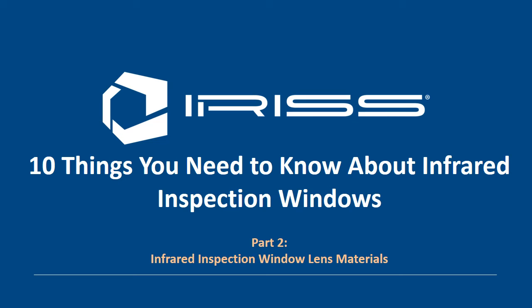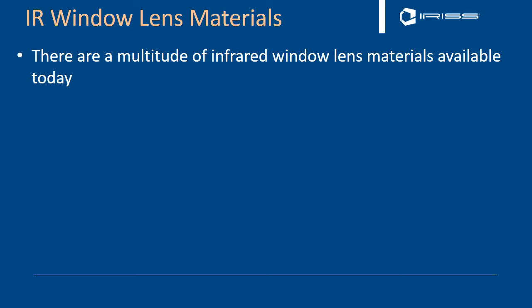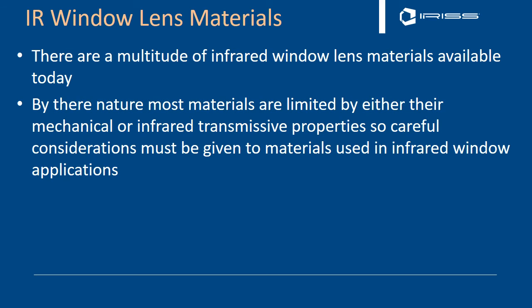Welcome to part 2 of 10 things you need to know about infrared inspection windows. In this section we will be covering the requirements of the actual infrared window lens material itself. There are a multitude of infrared window materials available to you today depending on the type of task you want to do with your infrared camera. By their very nature they have different mechanical and infrared transmissive properties, so you've got to give a lot of thought to the material you want to use in your particular application before you start investing heavily in your IR windows.